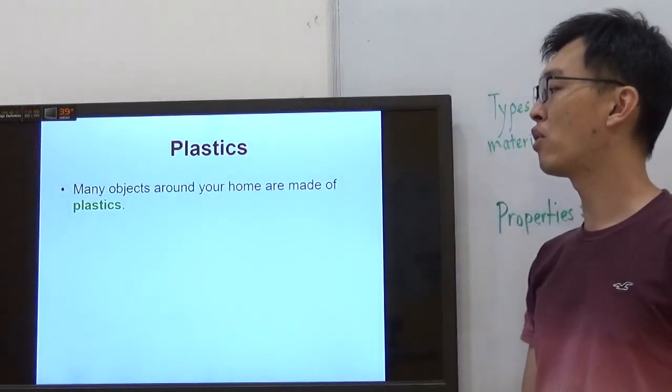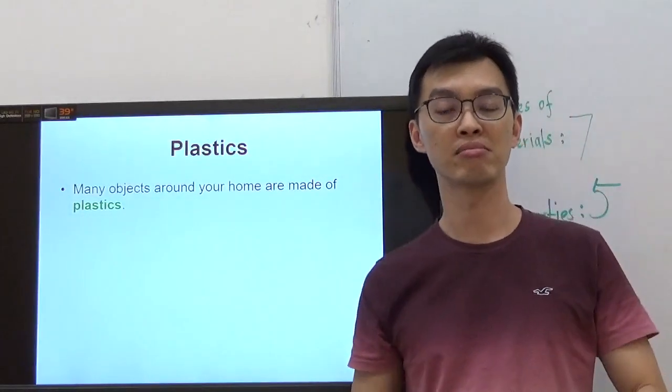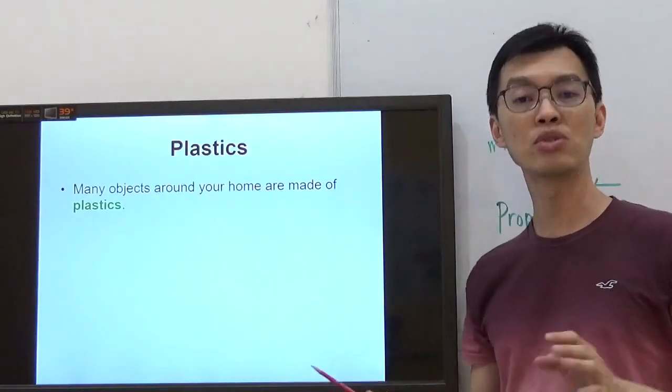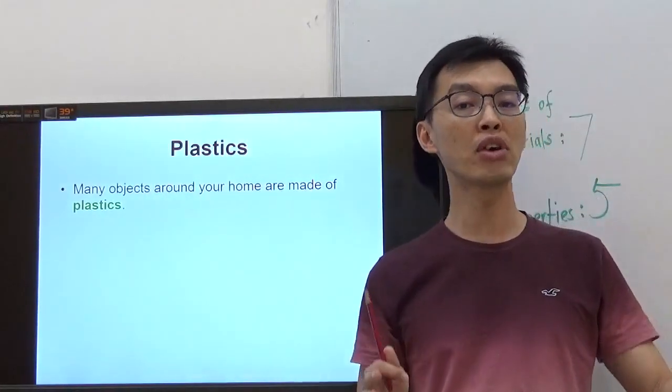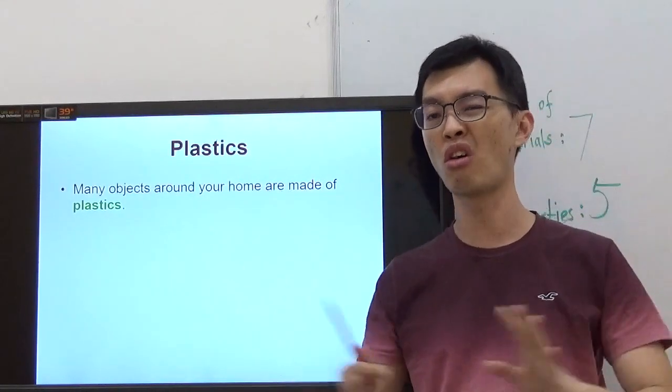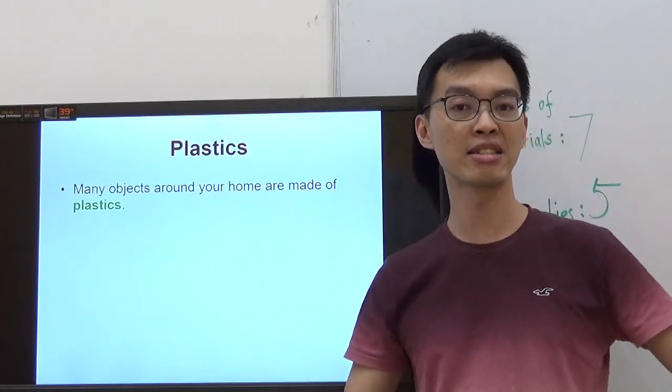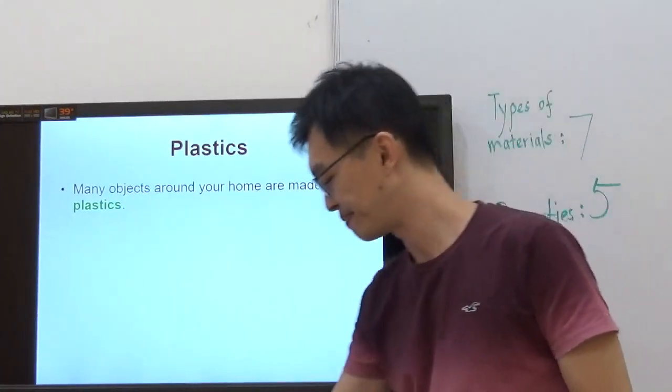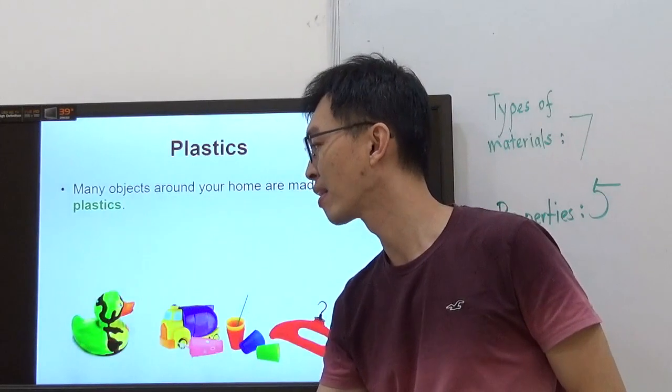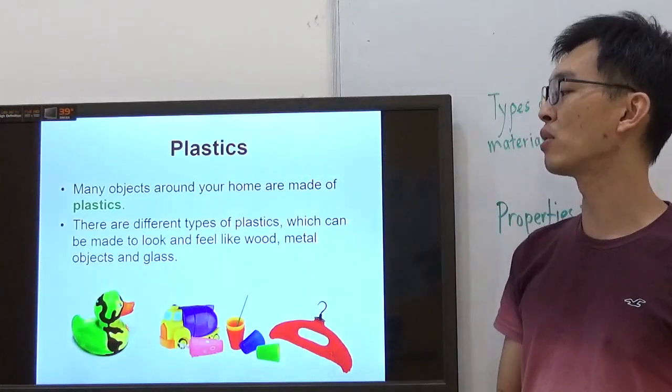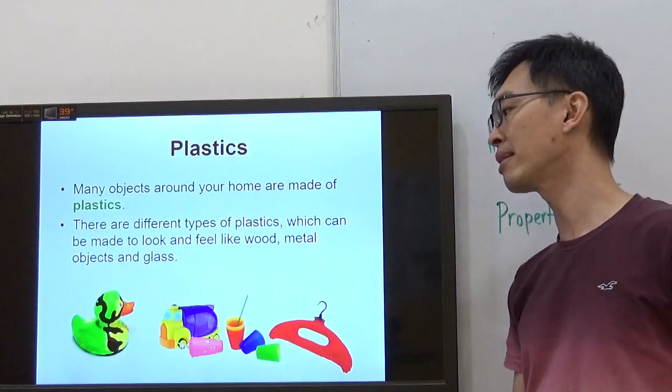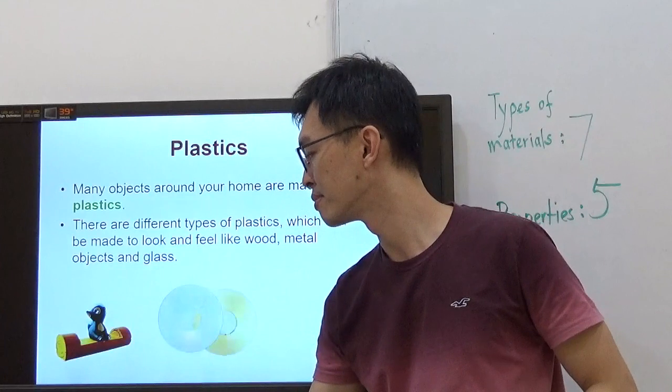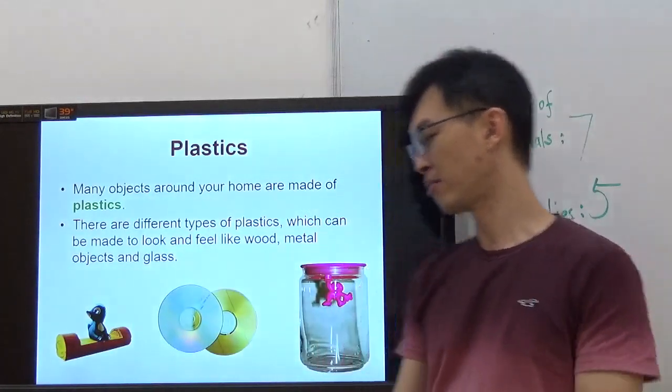Plastic. Many objects around your home are made of plastic. Yes, in fact, nowadays, the government has been asking us to cut down on plastic usage right now. So, you see, practically everything around you is plastic. If you've been to Teacher Patrick's Tuition Center, you know all the chairs are made of plastic, except for the four legs, which is made of metal. There are different types of plastic, which can be made to look and feel like wood, metal, objects, and glass.